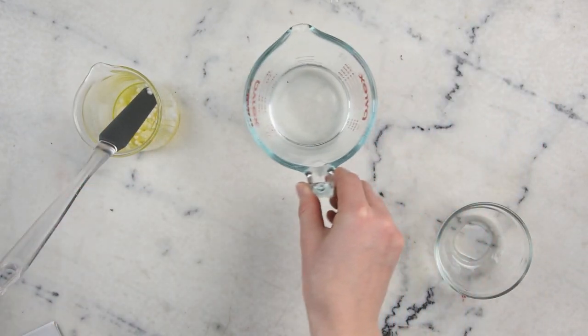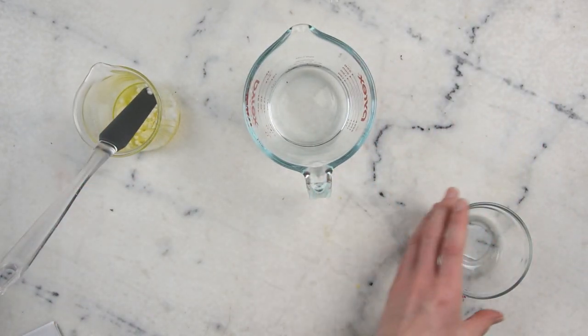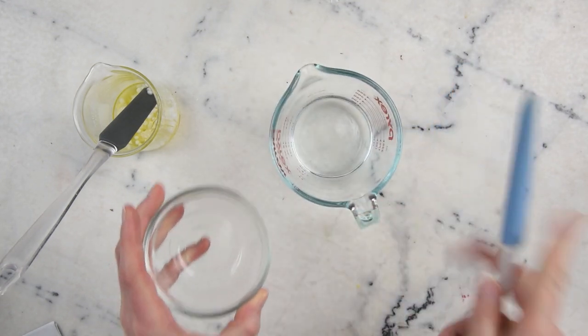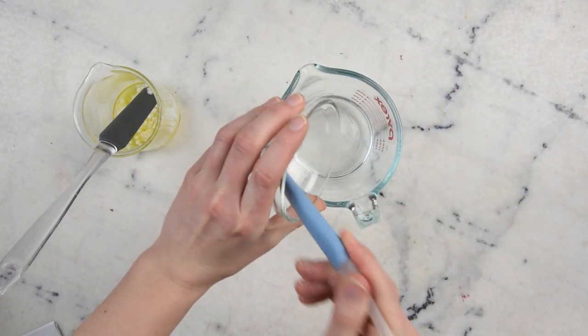And then we will get our water part ready. And the water part for this one is nice and simple. In here we have 80 grams of distilled water. And in here we have 2 grams of vegetable glycerin.